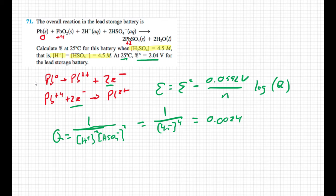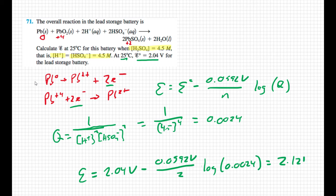Now I can plug this into my Nernst equation. My final electric potential is my standard electric potential, 2.04 volts, minus 0.0592 volts all over 2 times the log of 0.0024, which equals 2.12 volts.